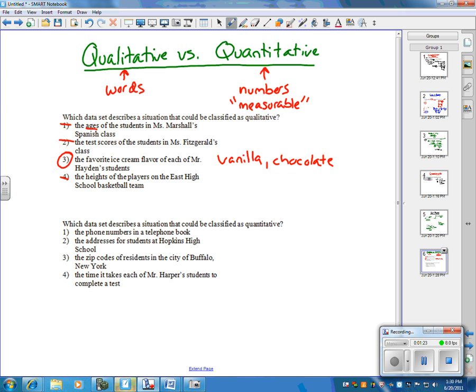For the second question that says quantitative, you can't measure someone's phone number, they're just given a phone number. An address is also something given to you, along with zip codes, because they're all based on where you live.